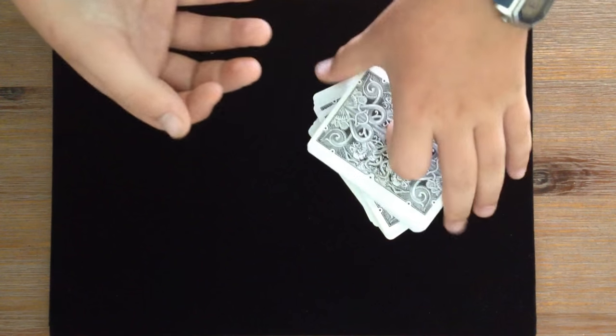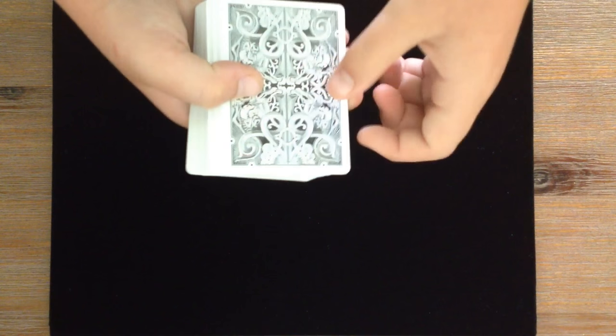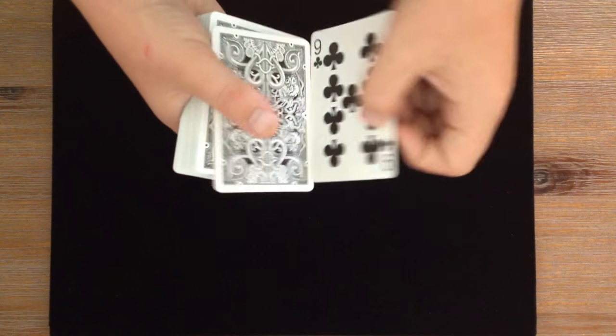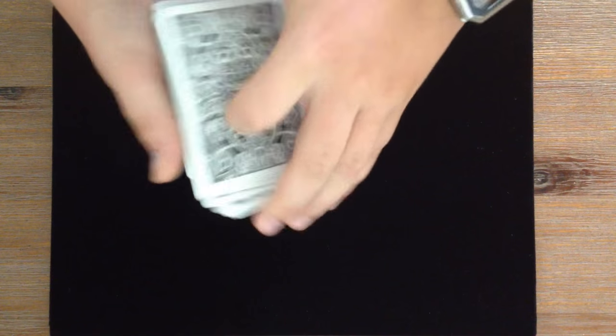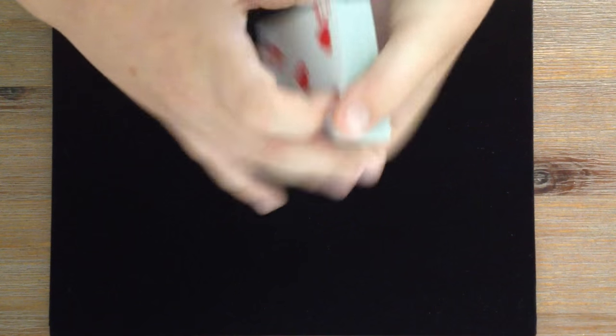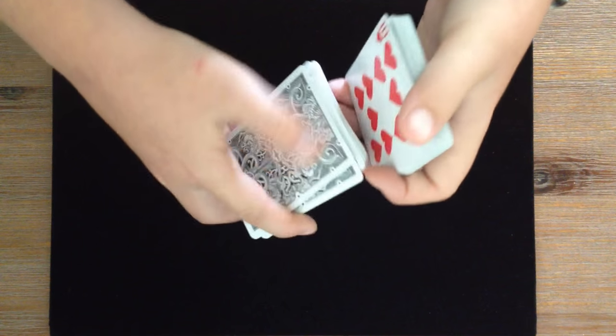Now you take half the cards off of the break, place them down, take off of the break, place them down. And take this packet. What that has done is actually controlled this card to the top. Okay, so they selected the nine of clubs and that's actually controlled it to the top.